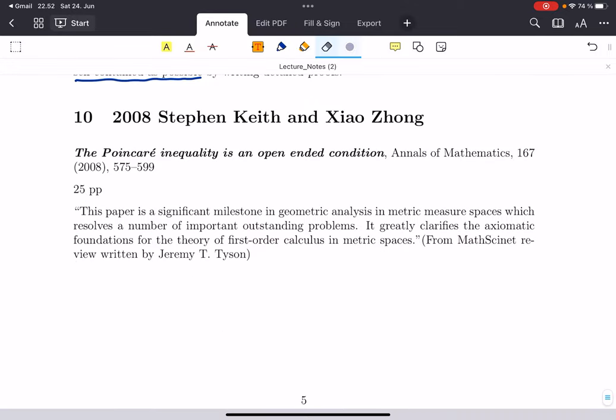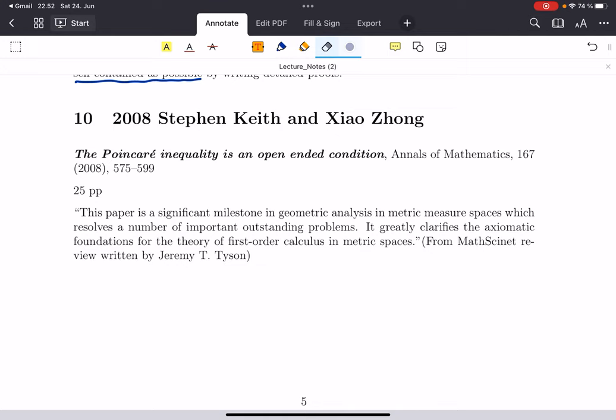This paper by Keith and Zhang from 2008, the last one on my list, I included it here for two reasons. First of all, it is a very pivotal paper in the whole theory. Number two, it has a beautifully written introduction, about seven pages, and just reading that introduction gives you a pretty good idea of where the theory was until then and why the result and how the result contributes. I also like the MathSciNet review written by Jeremy Tyson about this paper. Rather than quoting something from the paper, of which the title of the paper actually captures basically what happens in the paper here, the review says that this paper is a significant milestone in geometric analysis in metric measure spaces.